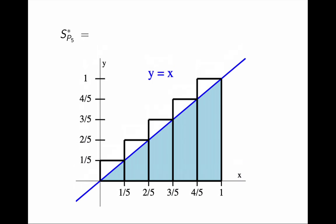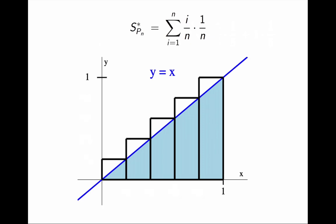The first rectangle has height 1/5 and width 1/5. The second rectangle has height 2/5 and width 1/5. And so on. I can rewrite this with sigma notation as sum from i equals 1 to 5 of (i/5) times (1/5). i/5 is the value of the function at the right endpoint, and 1/5 is the common width. And of course, the same expression will work for an arbitrary value of n.